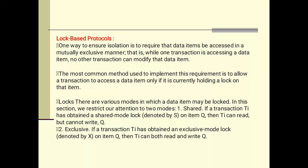One way to ensure isolation is to require that data atoms be accessed in a mutually exclusive manner — that is, one transaction is accessing a data atom and at that time no other transaction can modify that data atom. We have seen this in the previous video on properties of transactions: the isolation property states that when one transaction is being executed, no other transaction can execute at the same time. The most common method used to implement this requirement...